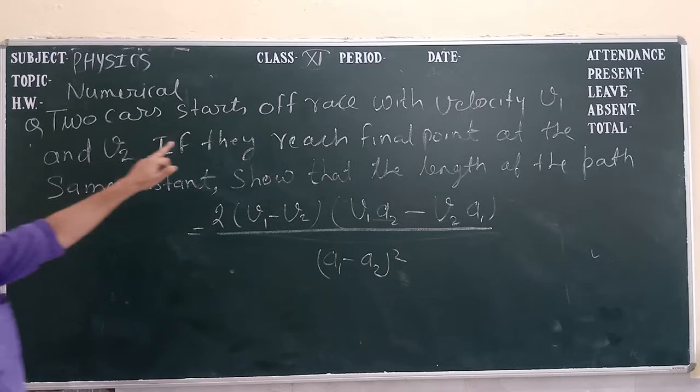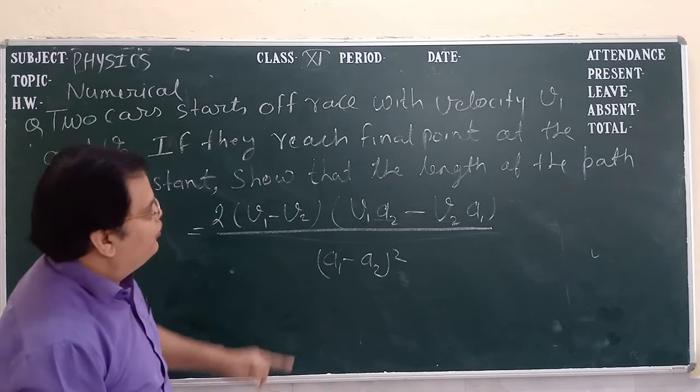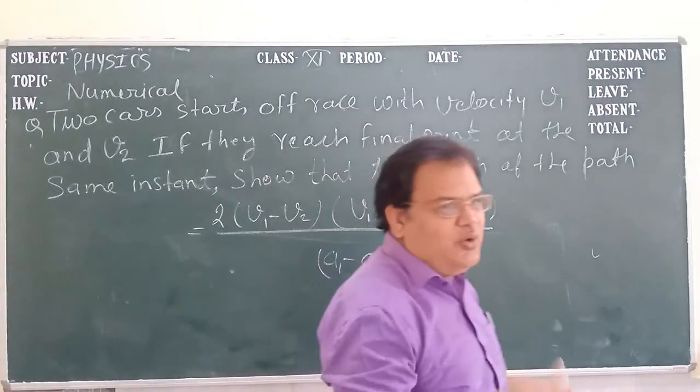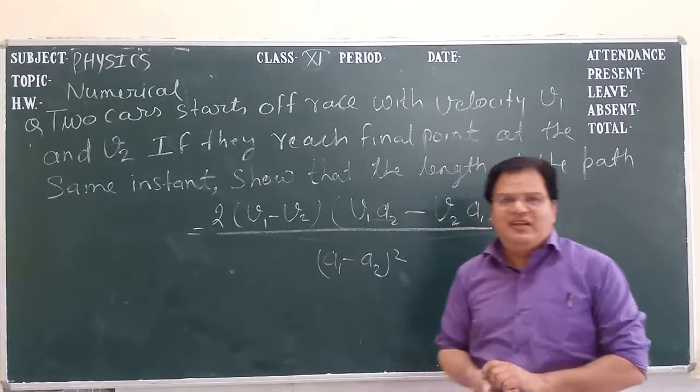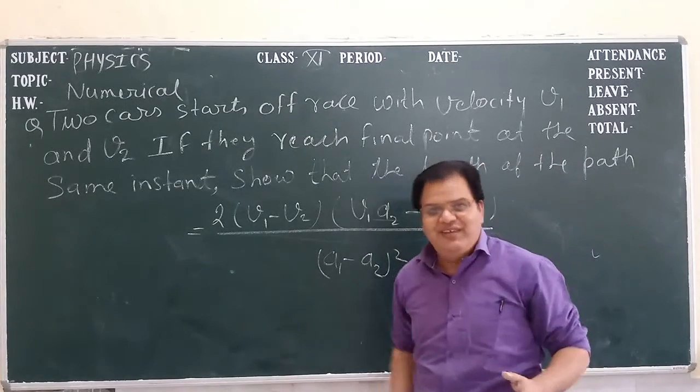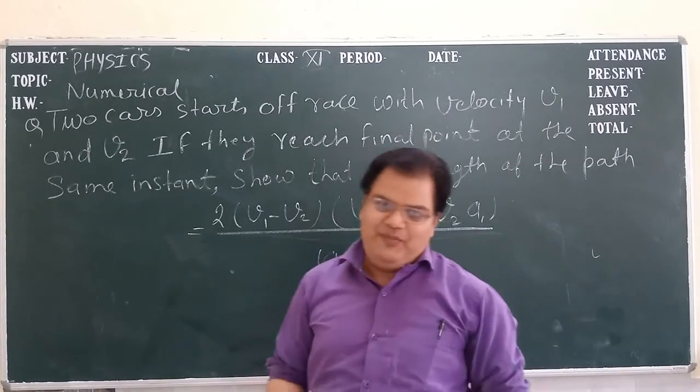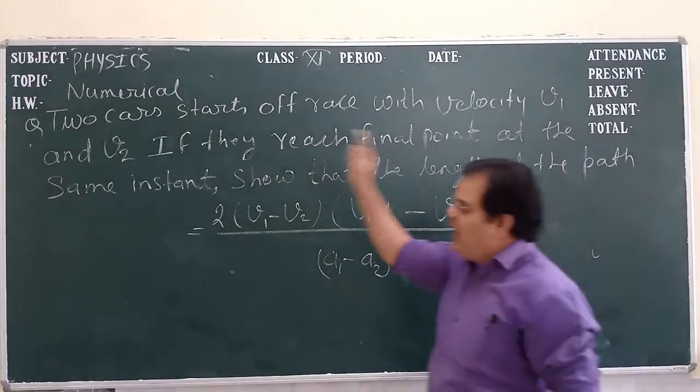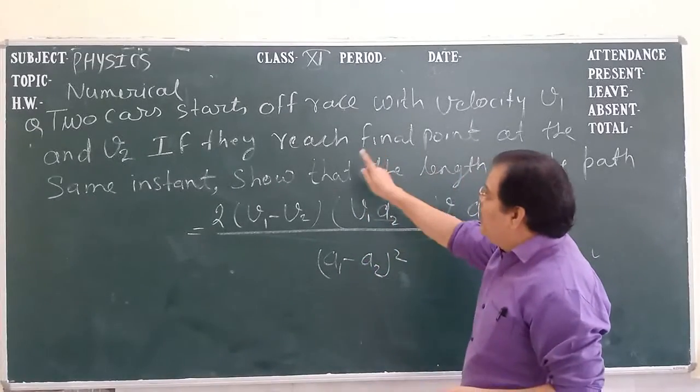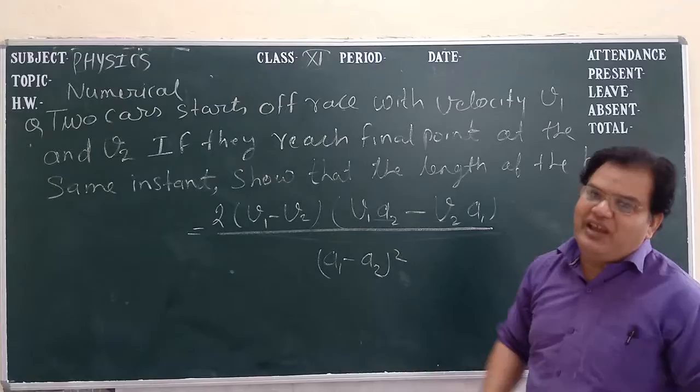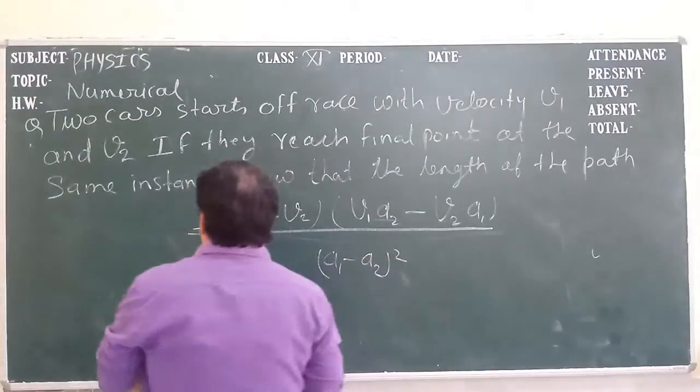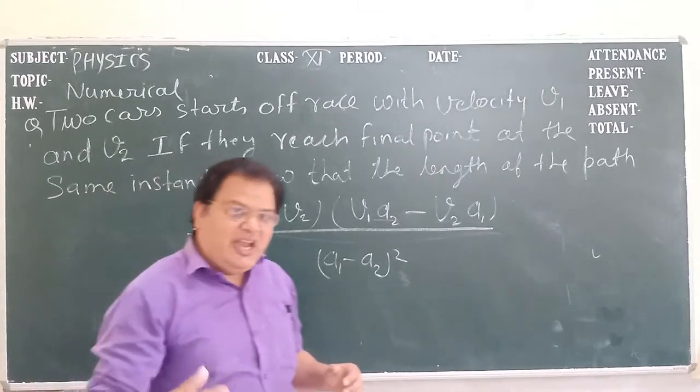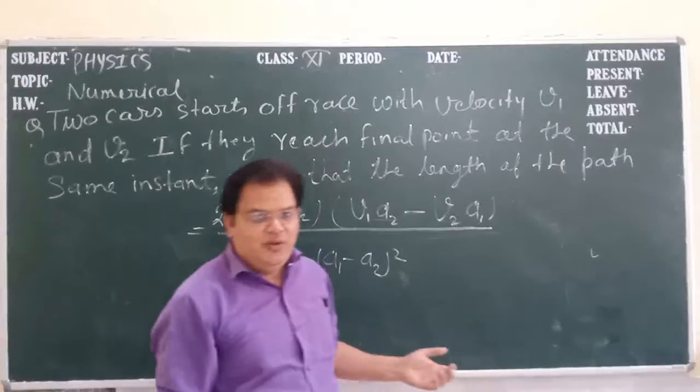Two cars start off race with velocity v1 and v2. There are two cars starting the race, like a formula race, and the destination is same. If they reach final point at the same instant, what does it mean? Both the cars reach at the same time at the final point.